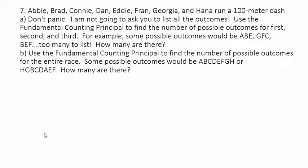Let's expand this more. Abby, Brad, Connie, Dan, Eddie, Fran, George, and Hannah run a 100-meter dash. Don't panic — I'm not going to ask you to list all the outcomes; that would be a lot. Use the fundamental counting principle to find the number of possible outcomes for first, second, and third.